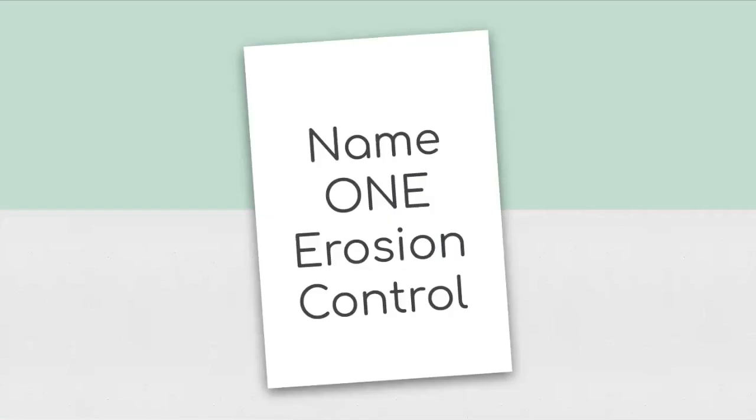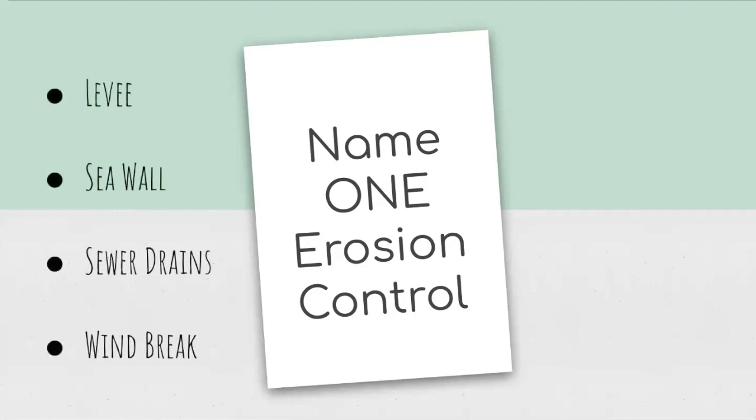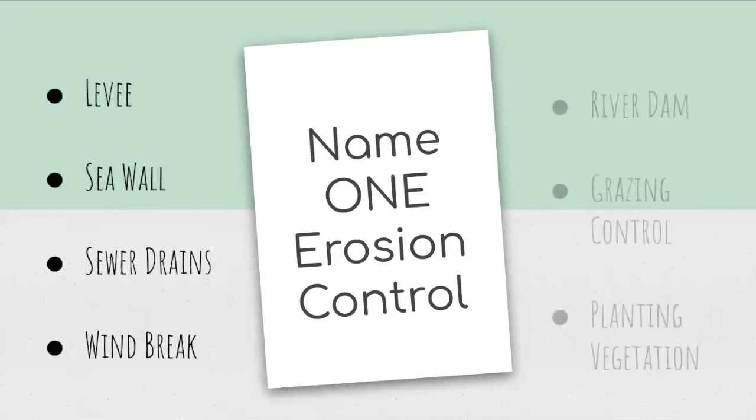Name one erosion control. Something that stops or slows down erosion. Name one erosion control. You could have said levee, seawall, sewer drains, windbreak, river dam, grazing control, or planting vegetation.